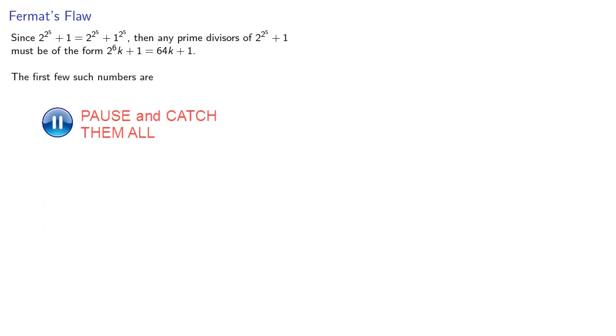So let's look at those Fermat primes again. Any prime divisor of this fifth Fermat number must be of the form 64k plus 1, and we can list the first few such numbers, but of these, only a couple are prime.